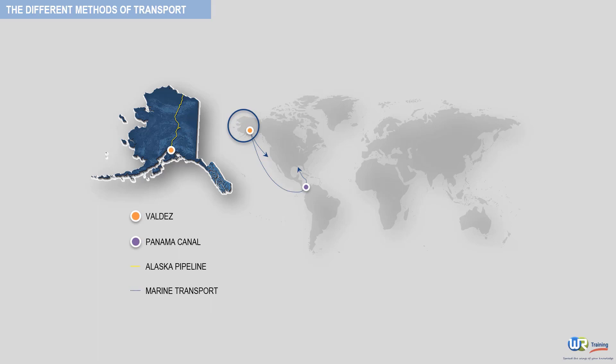Since most countries have refineries that enable them to meet a good part of their own product requirements, there is far less long-distance shipment of finished petroleum products than of crude oil. However, the need to balance product supplies between different regions does require a certain level of petroleum product shipments, which are in general made in smaller-size tankers than those used for crude oil. We will discuss this in detail further ahead.